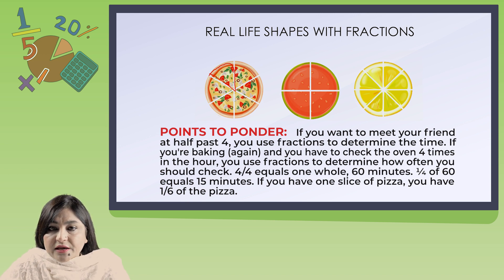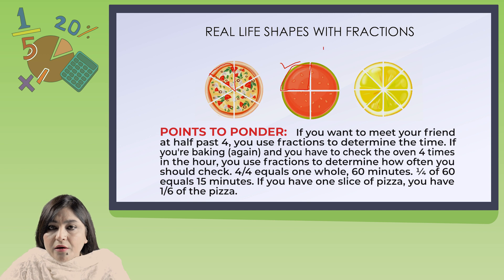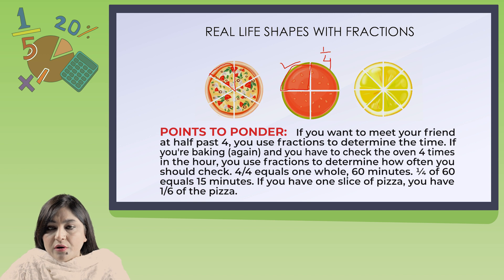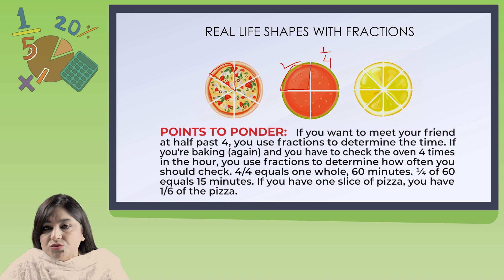Look at the second shape. If you have one slice of watermelon, how many slices do you have? 1 by 4. But why is it 4? Because the total pieces are 4. Look at the last shape — if you have 2 pieces, that is 2 out of how many pieces? 8. Why is it 8? Because 8 is the total number of pieces.